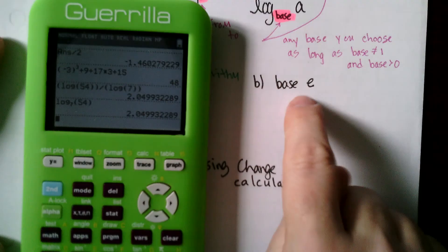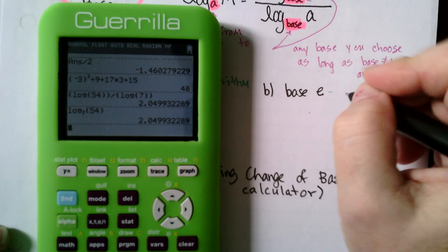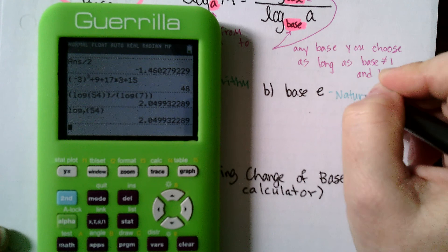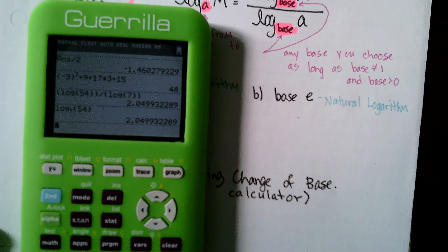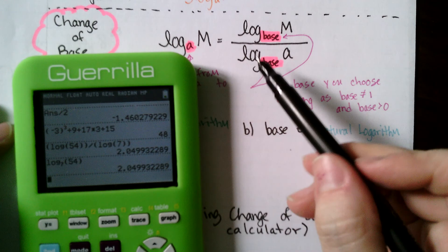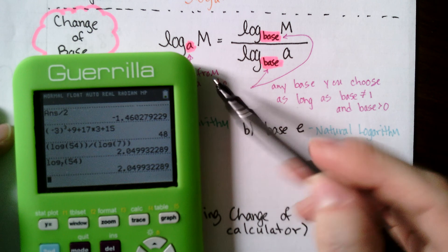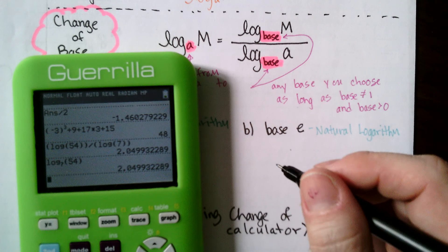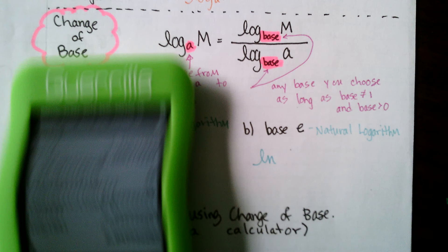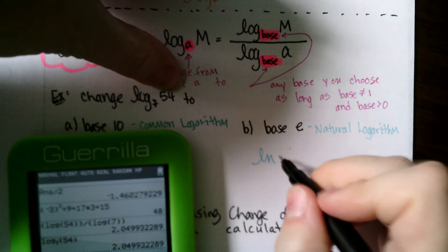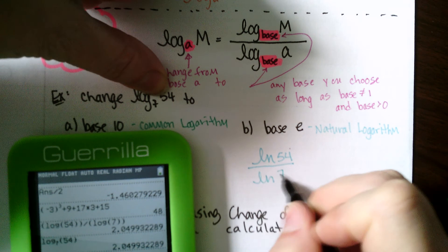Let's practice with base e using the same change of base formula. Base e is the natural logarithm — we don't write log base e, we write ln. So changing log base 7 of 54 to base e, my expression becomes the natural log of the original argument, 54.